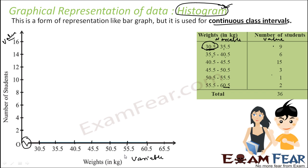This axis is the variable. We are assuming 1 cm is 5 kg. For the y-axis representing number of students, since the maximum is 15, we make sure values reach 15. You can use any scale — 2, 4, 6, 8 or 1, 2, 3 up to 16, or even 3, 5, 15. Anything works, as long as you can plot all your data points.